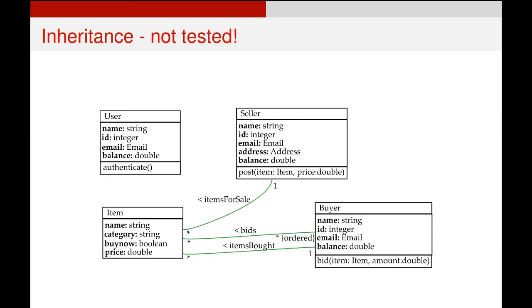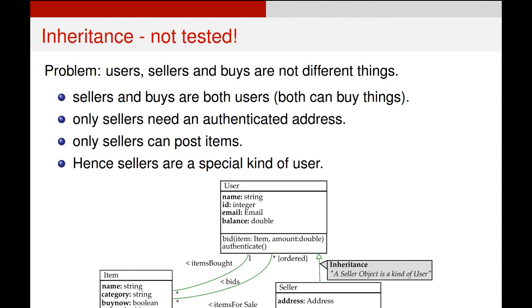The question then is: do we need all three of those classes? Well, yes and no. What we can do instead is get one class to inherit properties from another. I've created a new user class which has all the attributes and behavior of both the buyer and user class mixed into one, because sellers and buyers are both users and both can buy things. So that buying action is part of the user class rather than requiring its own separate class.